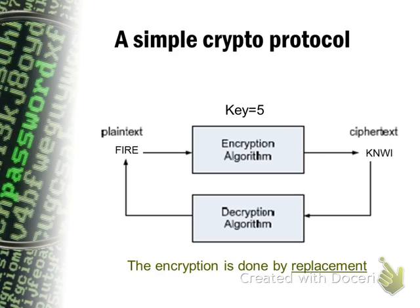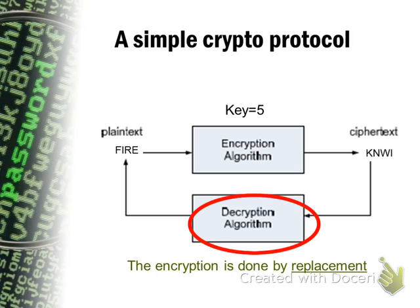What we are using here is called a simple replacement or simple substitution. We are substituting every single letter of the word using a key of 5, which means that for every letter — for example, the plain text 'fire' starts with F — we replace it with the letter that is 5 positions to the right on the English alphabet. So the result is KNWI. If we want to re-obtain the original plain text from the ciphertext, we execute our decryption algorithm, which transfers the ciphertext back into the plain text by inverting the steps of the encryption algorithm — shifting left instead of right in the alphabet.